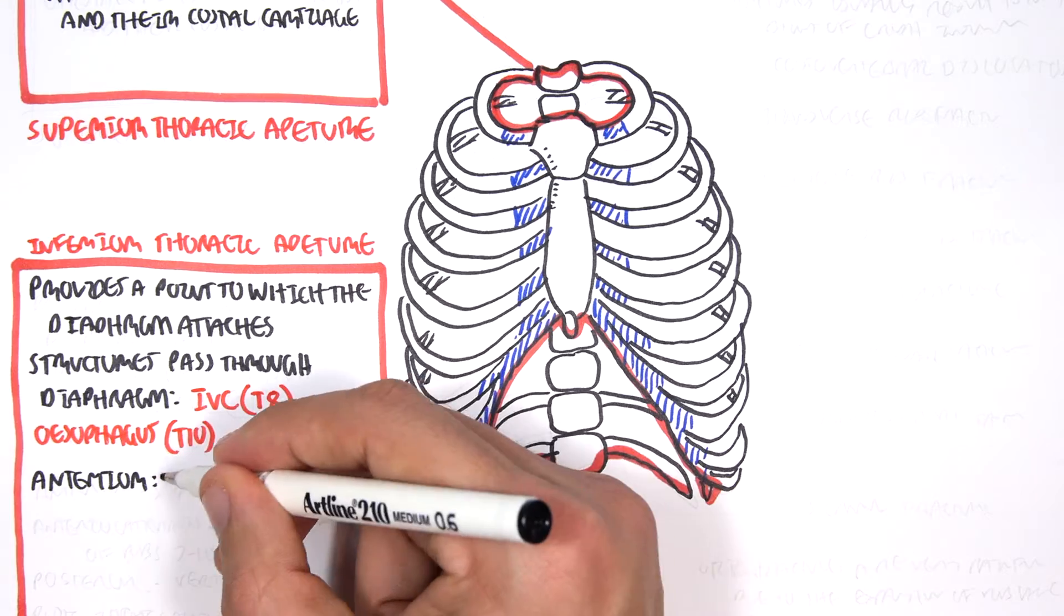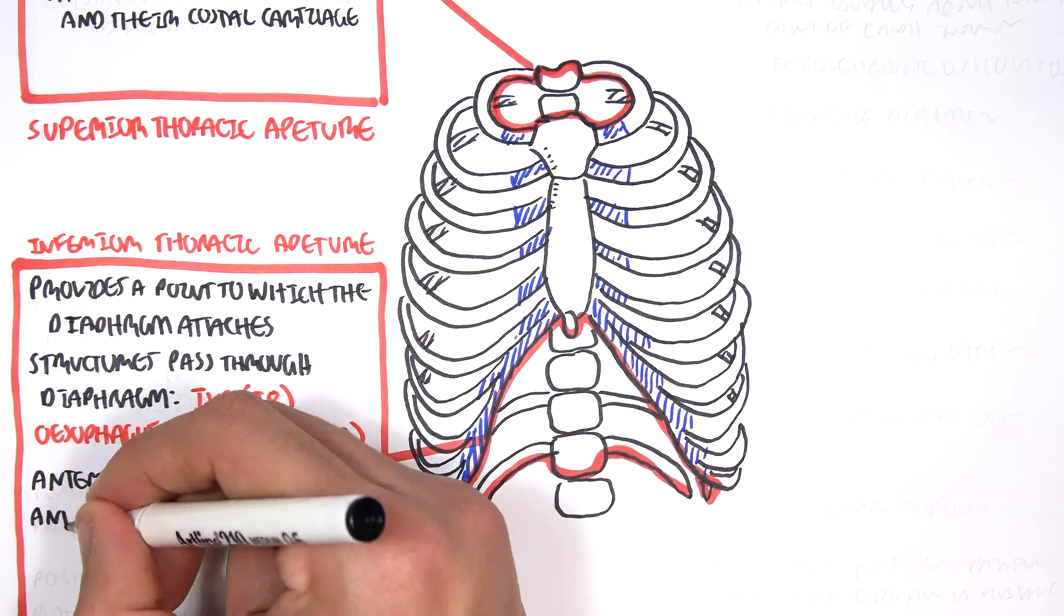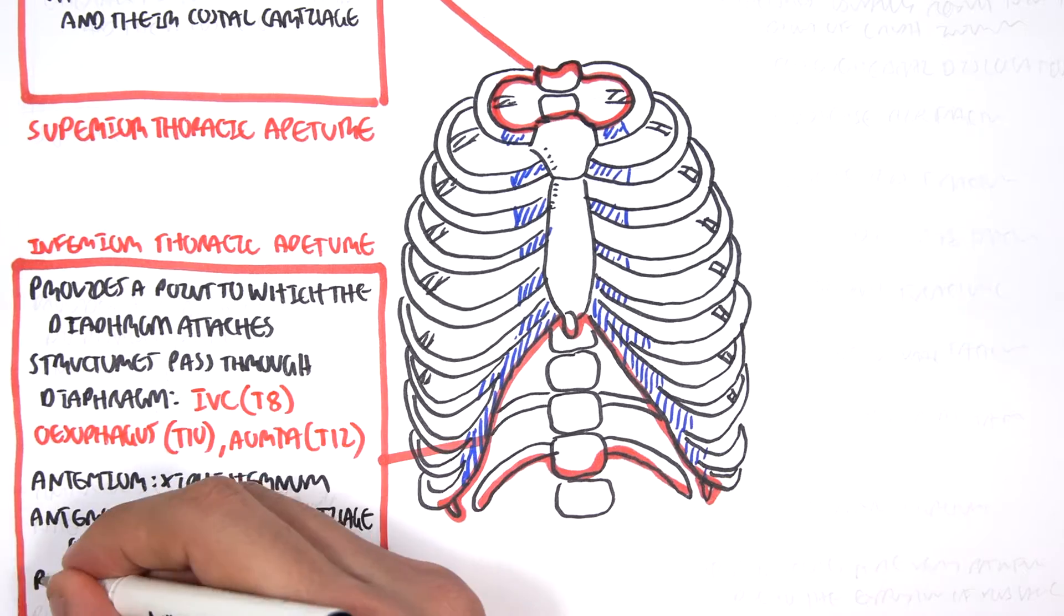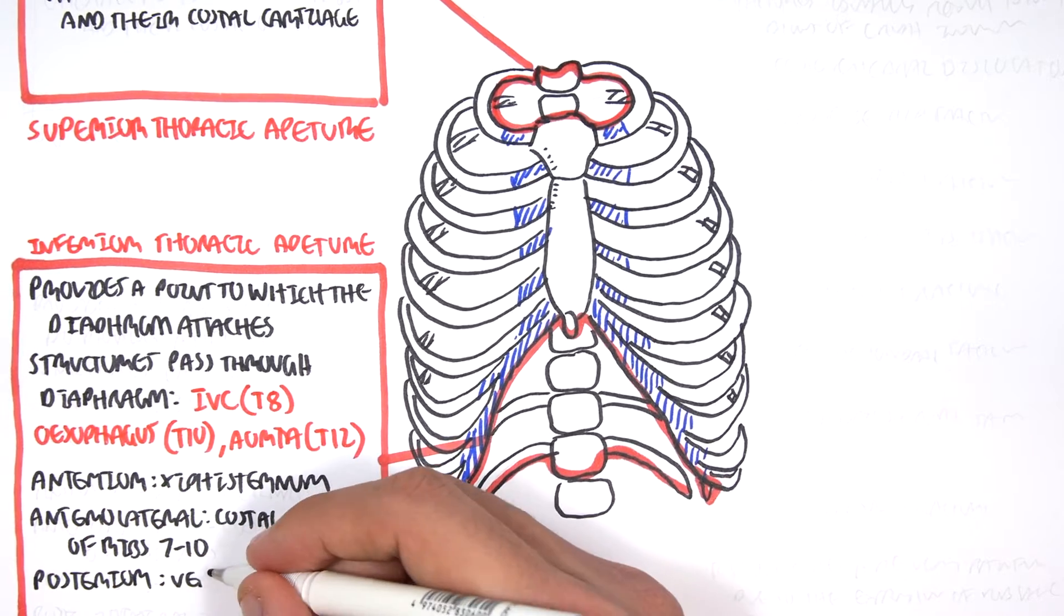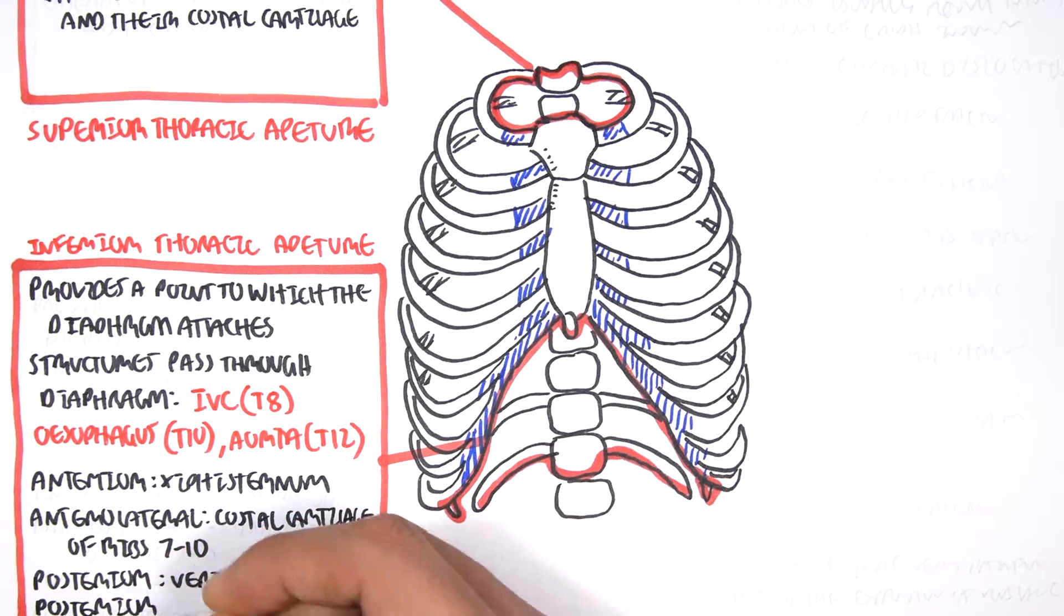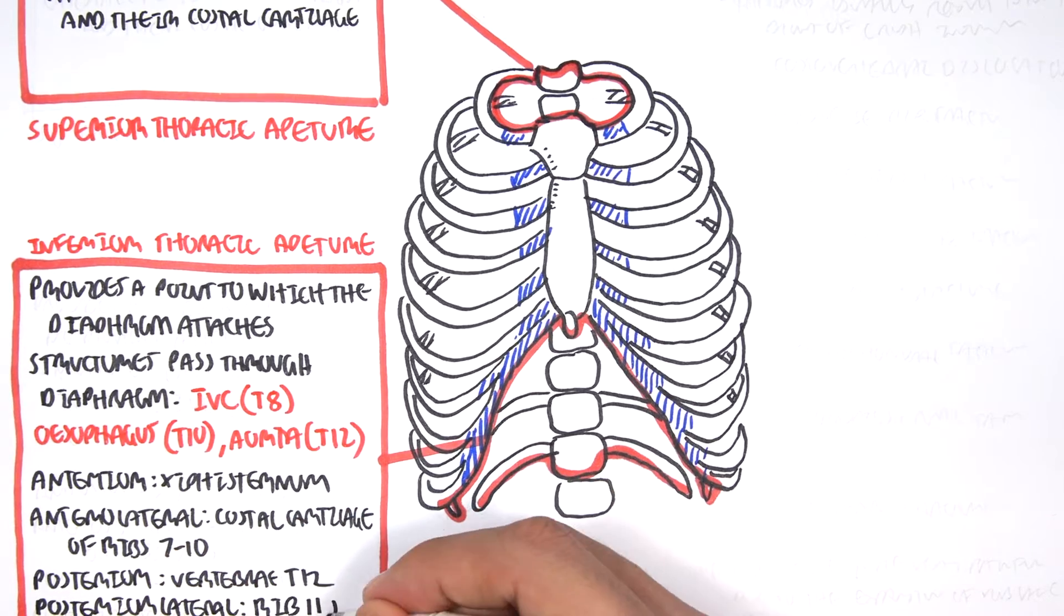The boundaries: anteriorly is the xiphoid sternum, anterolaterally is the costal cartilages of ribs 7 to 10, posteriorly is the vertebra T12, and posterolaterally is the ribs 11 and 12.